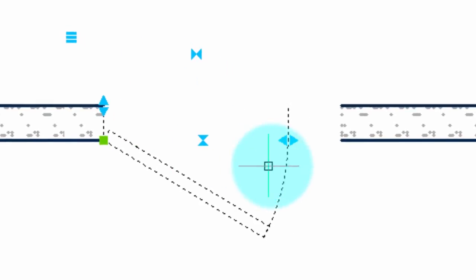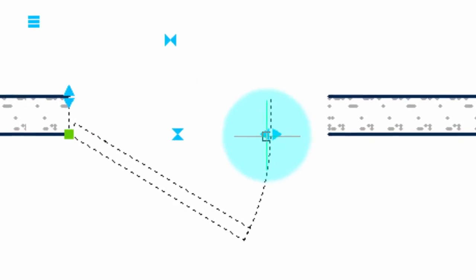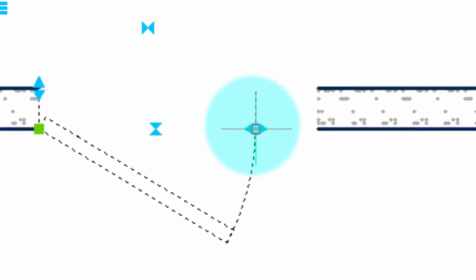First of all, there are these ones that have double arrows. These ones scale the block to make it bigger. There's a horizontal one and a vertical one, and that tells you they will scale the door horizontally or vertically.